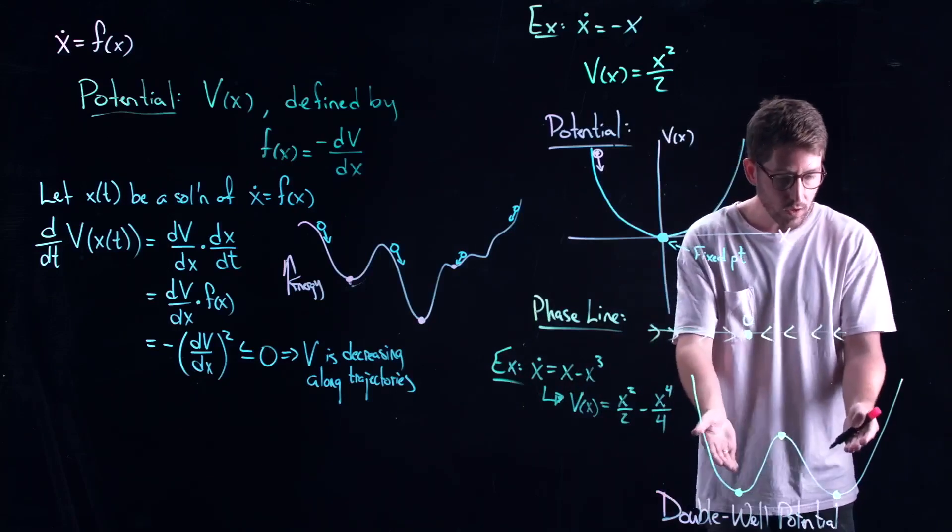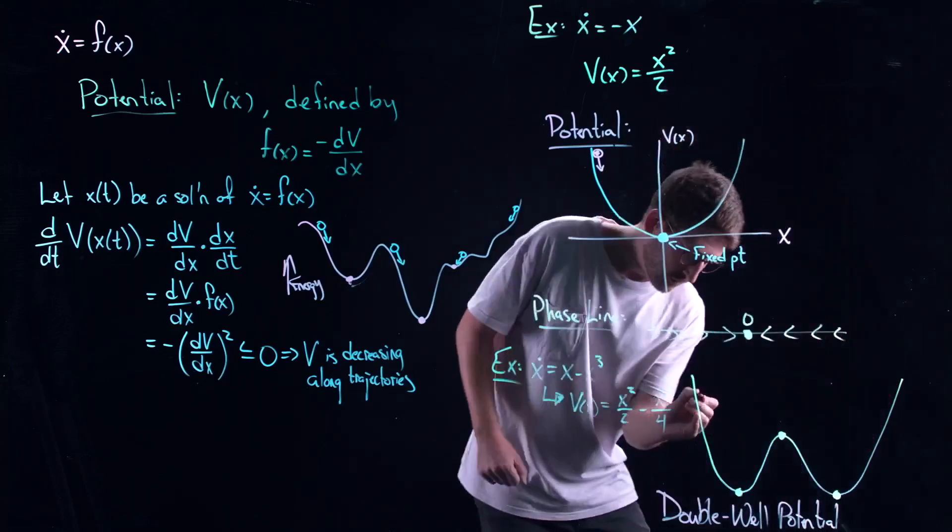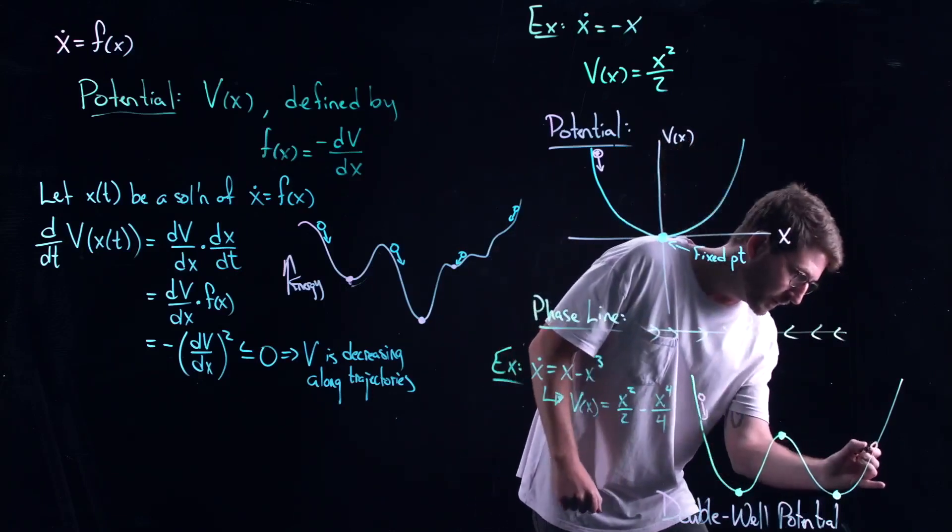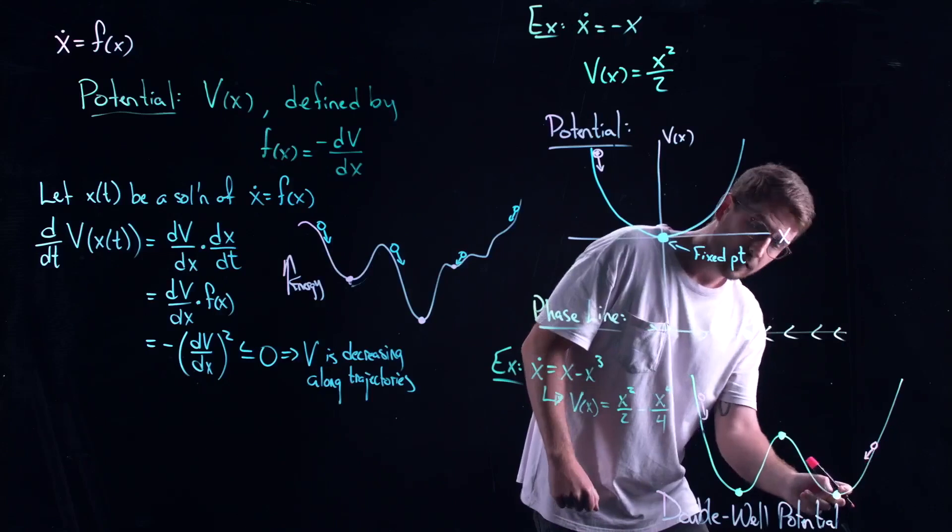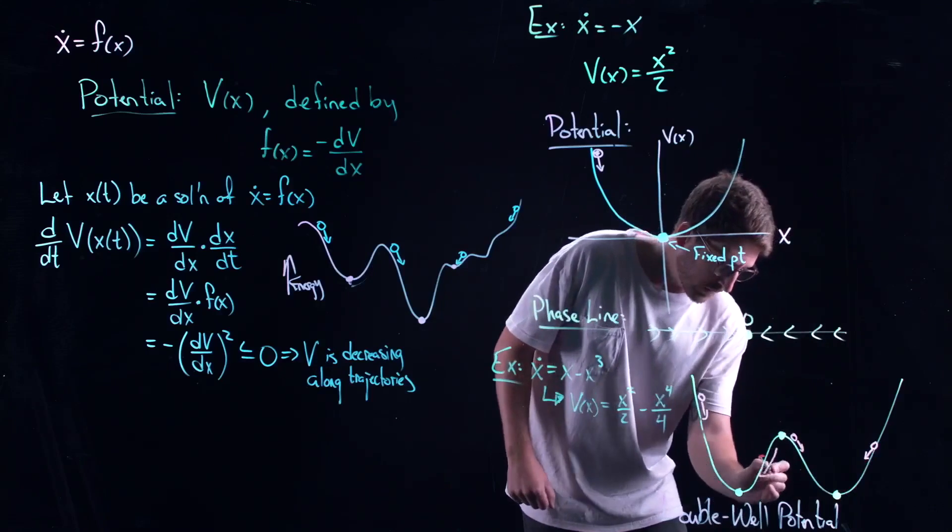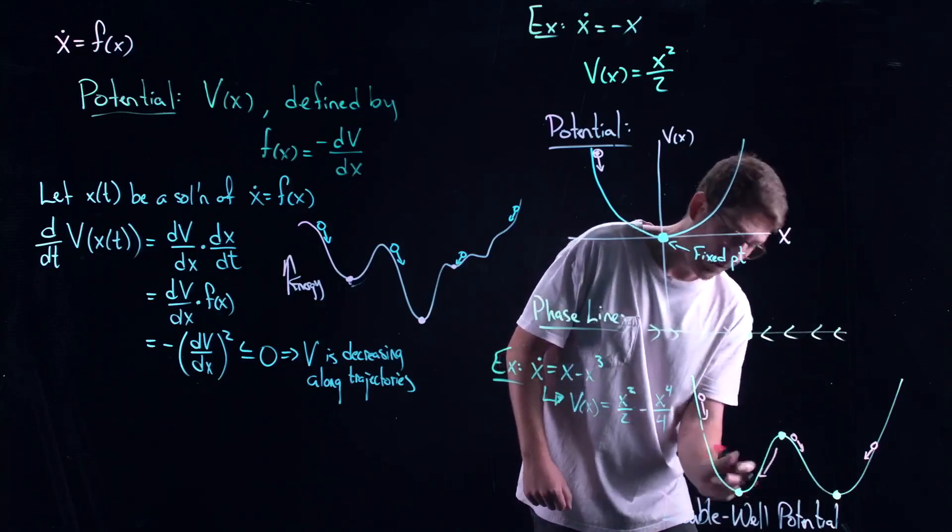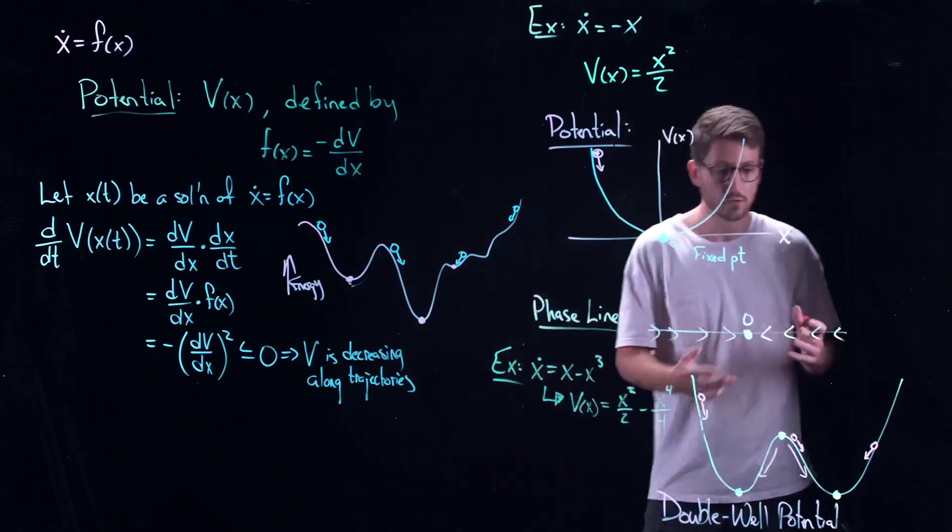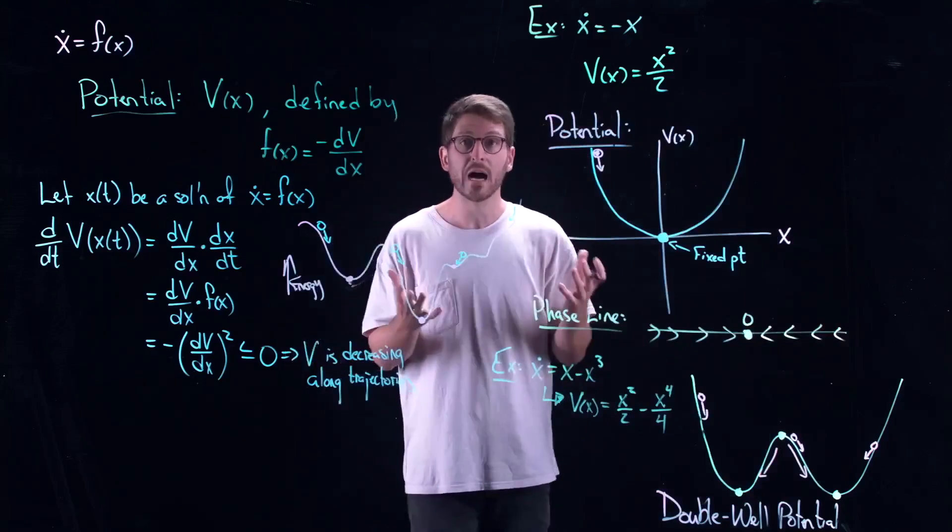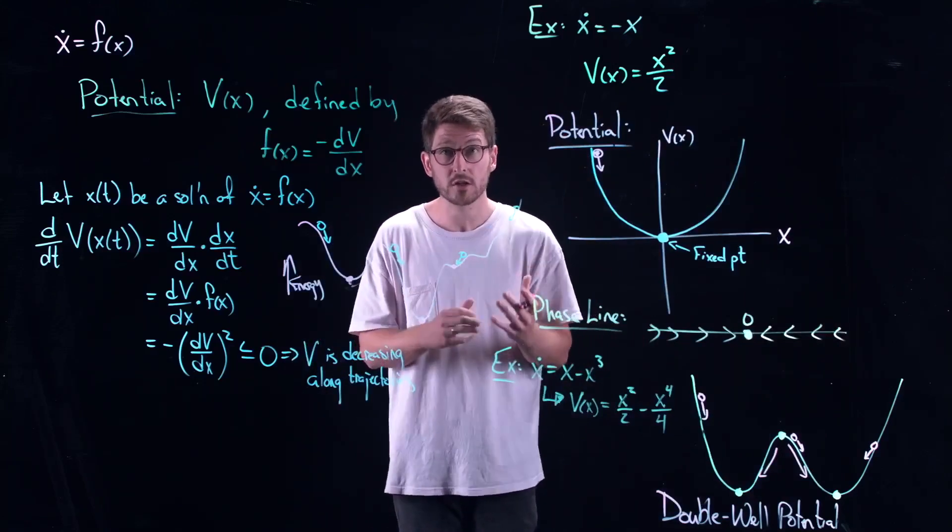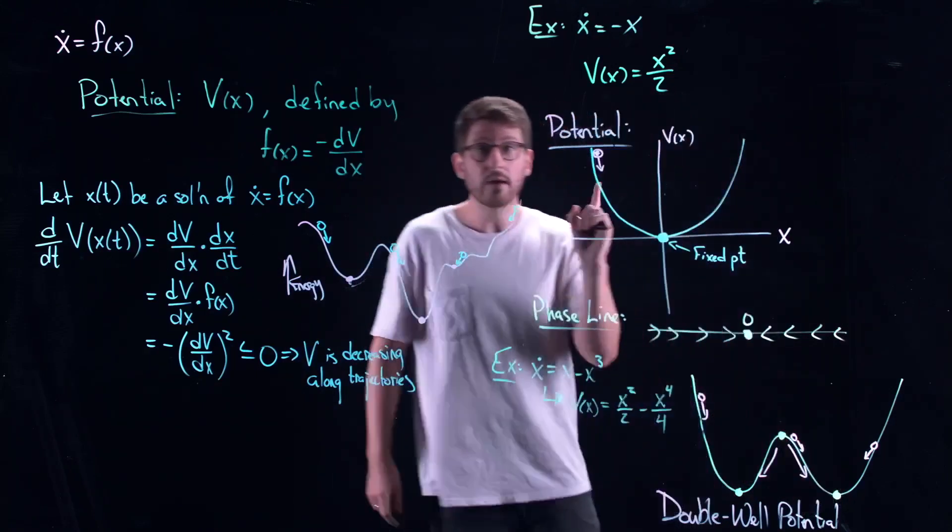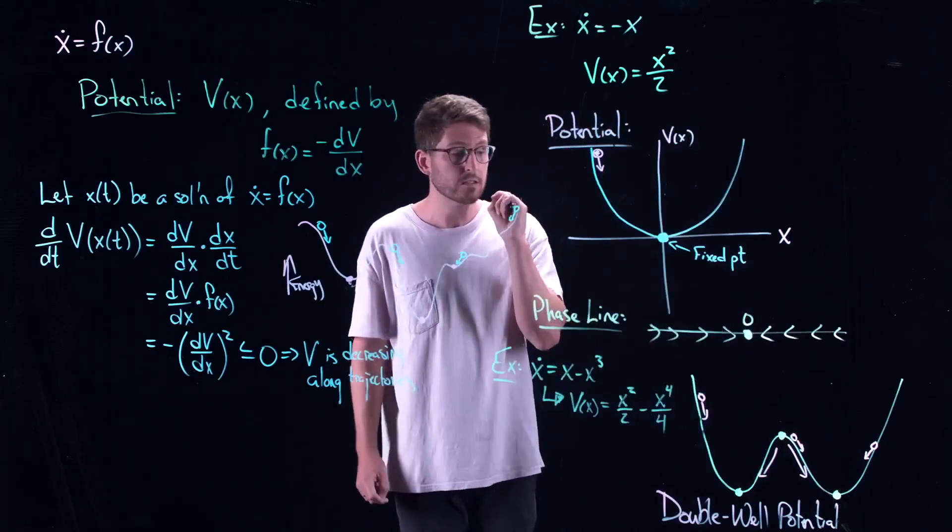Right? So whichever one of these you wind up on depends on where your particle starts. If your particle starts up here it will roll towards this well down here. If your particle starts over here it will roll down here. Similarly, this guy in the middle is separating out where people go. If you start to the left of them, you go into this well. You start to the right, you go into this well. Now this is what's referred to in mathematics and in nature as bi-stability. It's a method of sort of competition that you can find in models. Right? You have two stable states that are competing for dominance.